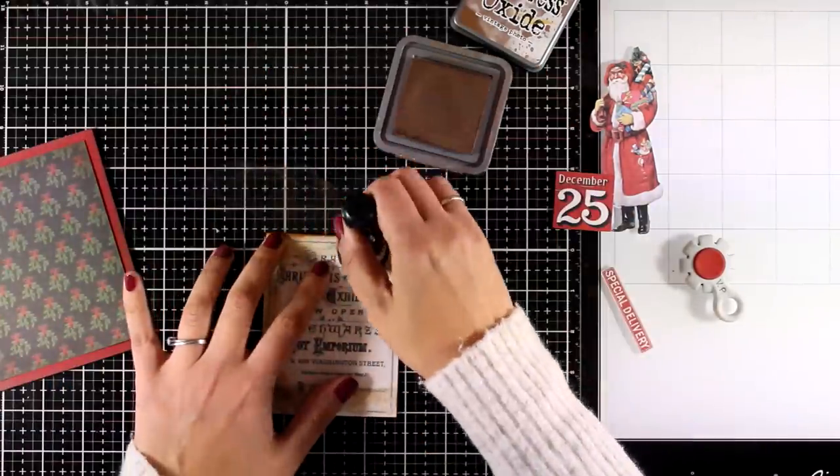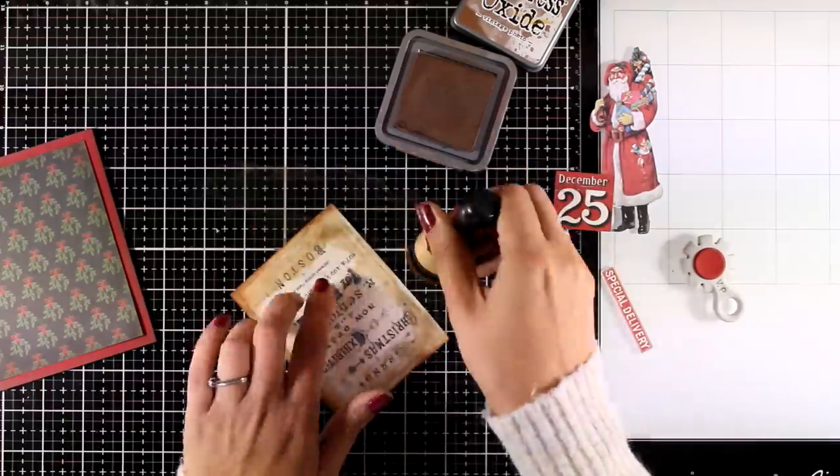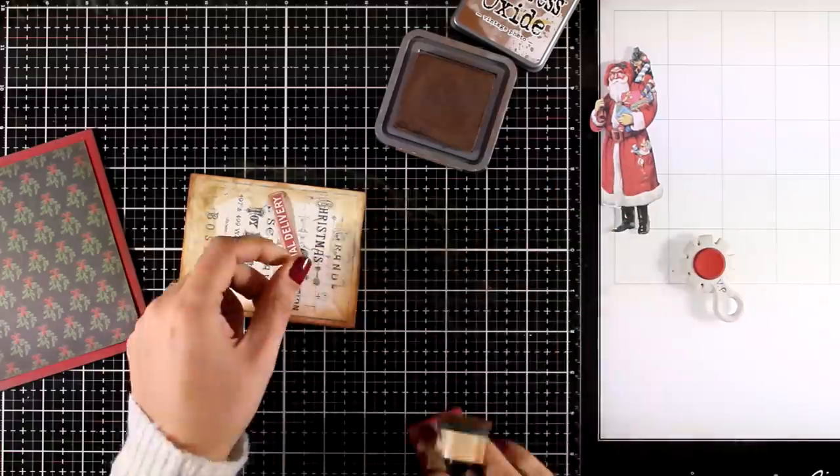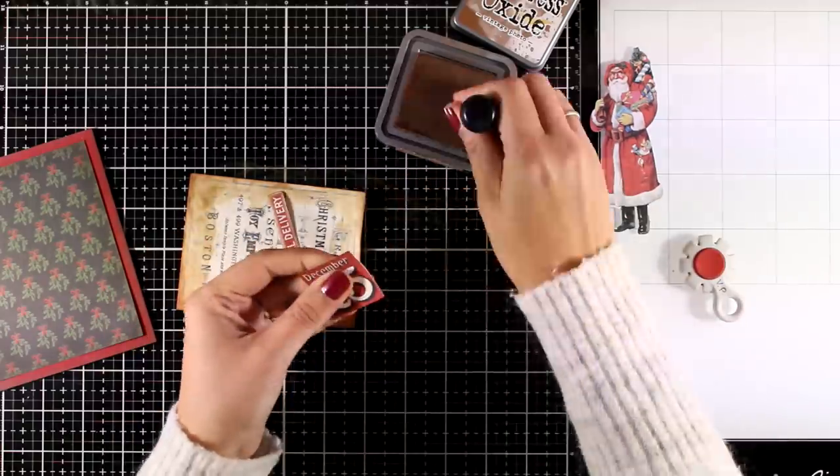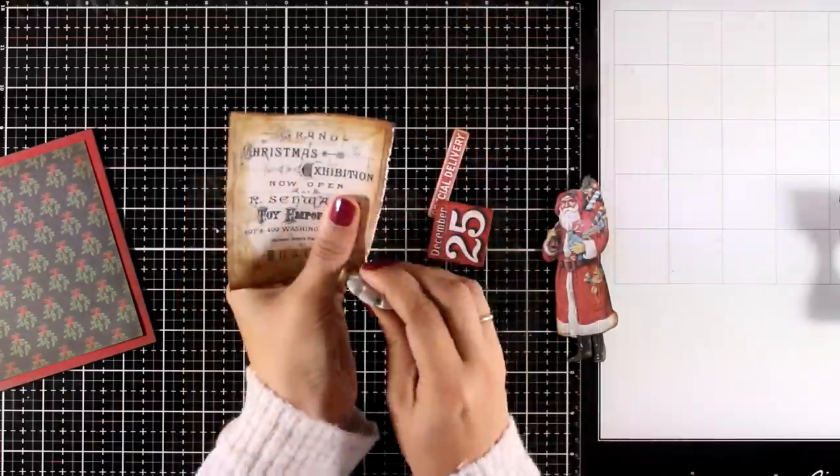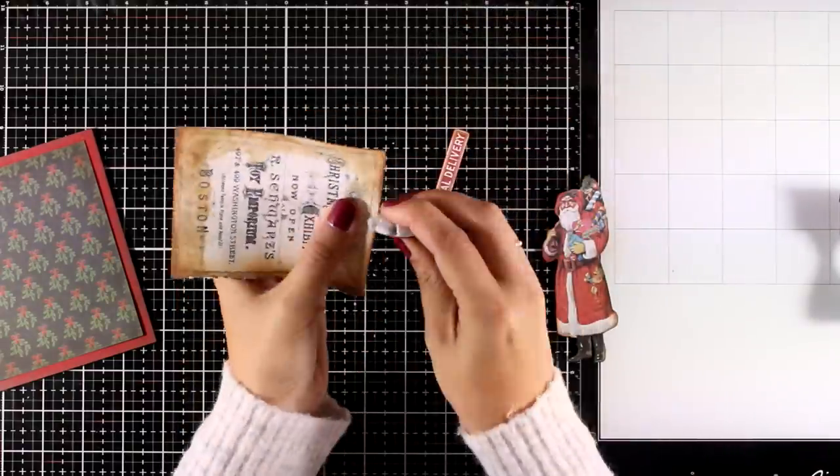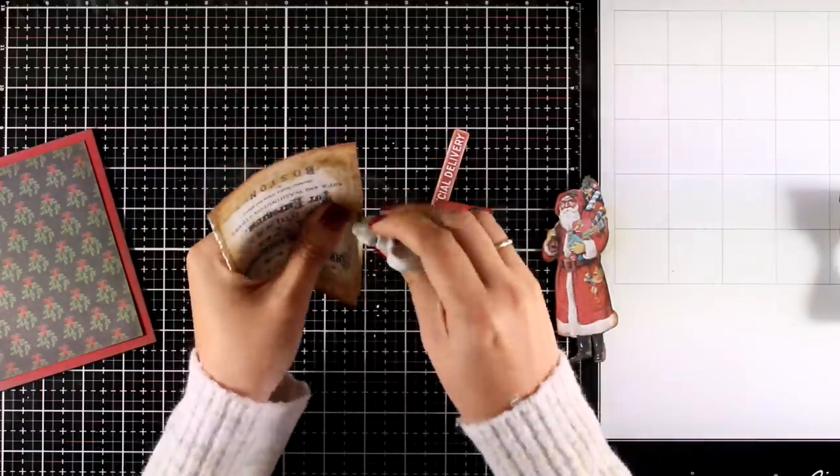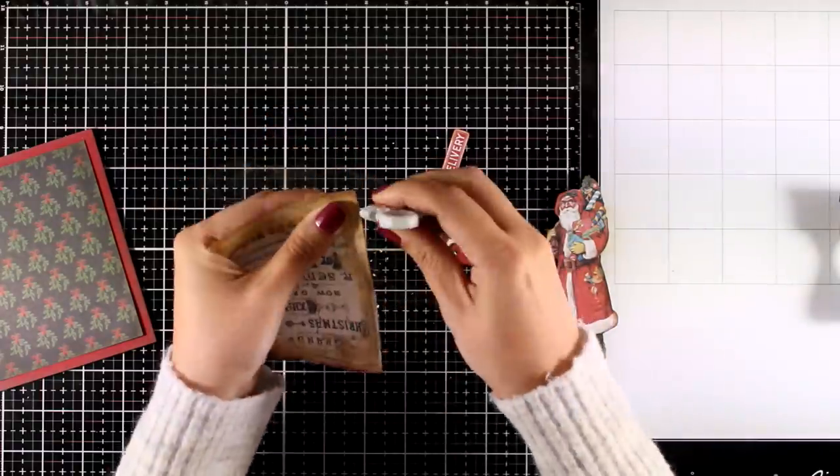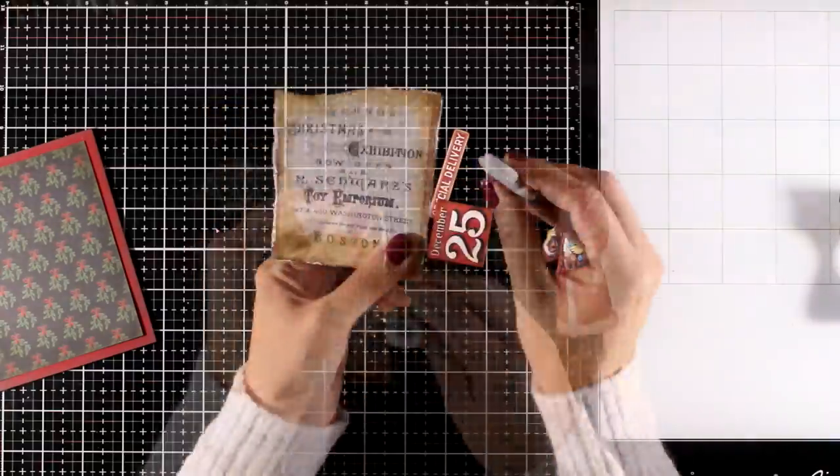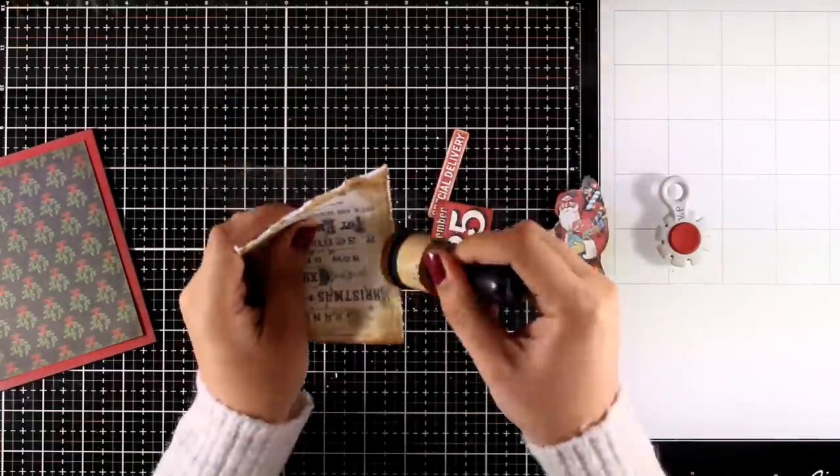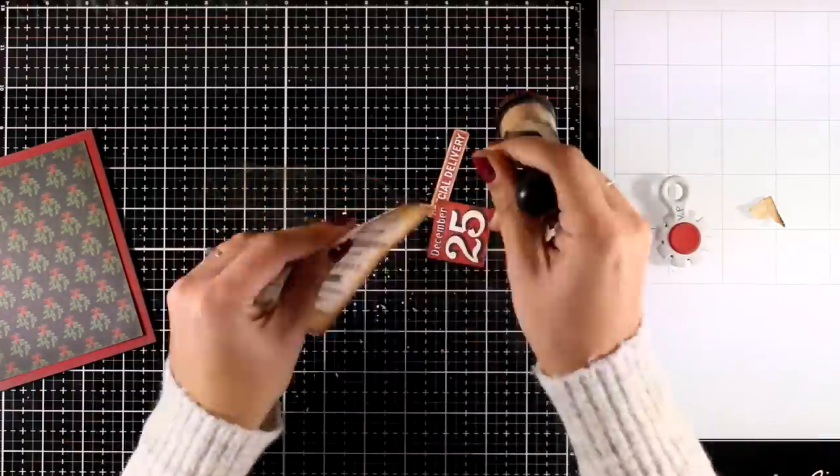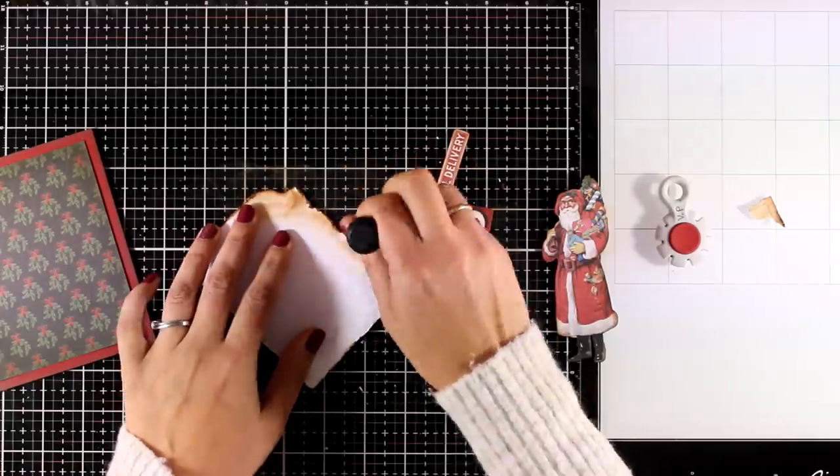I'm inking up the edges of my red cardstock, and you can see how this is going to give a lovely border around my panel. Since I'm going for Victorian style Christmas cards today, the inking of the edges with Vintage Photo really makes a big difference in my design. Now I'm going to use my edge dresser and I will go all around the edges. The idea here is to make this cutout, this piece of paper, look even older than it looks at the moment. I'm also going to tear off one of the corners and I'm also going to ink up the back.